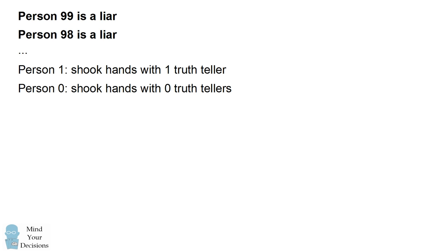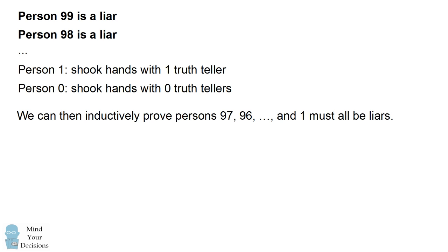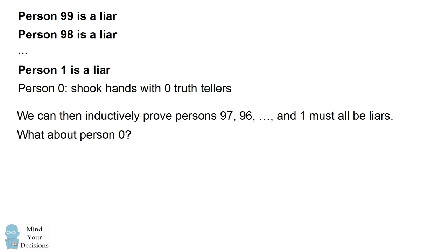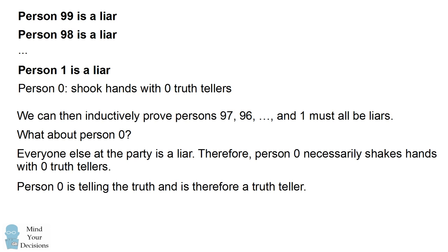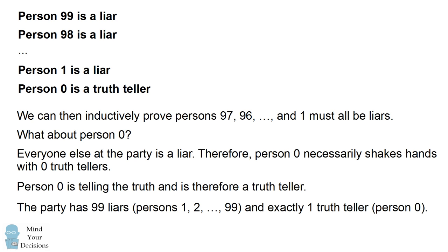Now we can continue this process. We can inductively prove that persons 97, 96, and so on, all the way down to person 1, must all be liars. We'll label each person accordingly. What about person 0? We've already figured out that persons 1 to 99 are liars — everyone else at the party is a liar. Therefore person 0 necessarily shook hands with only liars. There are 0 truth-tellers that person 0 can shake hands with. This means person 0 is telling the truth and is therefore a truth-teller. So the answer to this problem is that there are 99 liars, persons 1 to 99, and exactly one truth-teller, which is person 0.